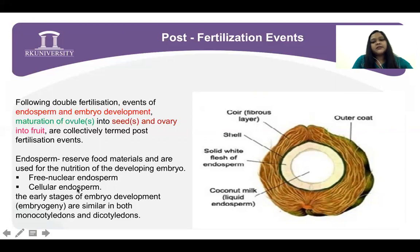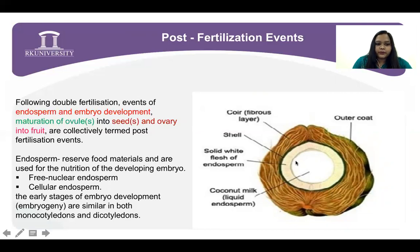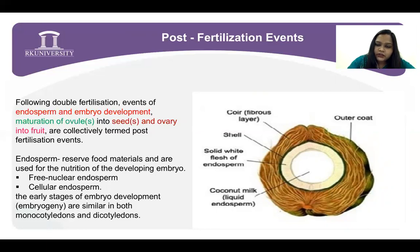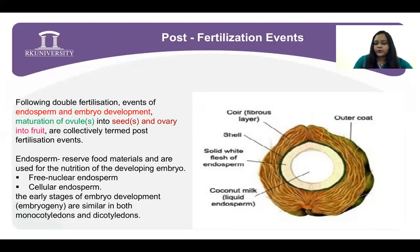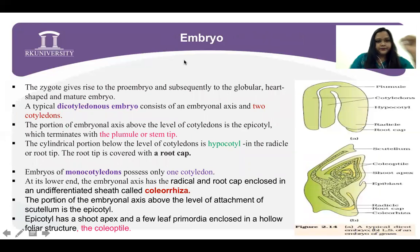You have seen a coconut — into the coconut, the coconut water is the free nuclear endosperm and the fleshy white material is the cellular endosperm, in which walls are formed between the nuclei. The early stages of embryo development are similar in both monocotyledon and dicotyledon. The free nuclear endosperm is multi-nucleated and visually in liquid form, while cellular endosperm creates walls between the endosperm nuclei making it fleshy.